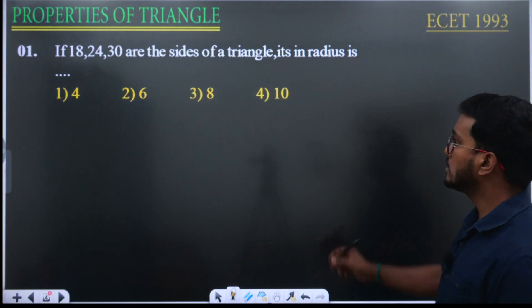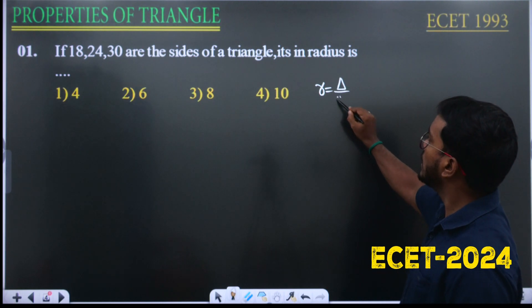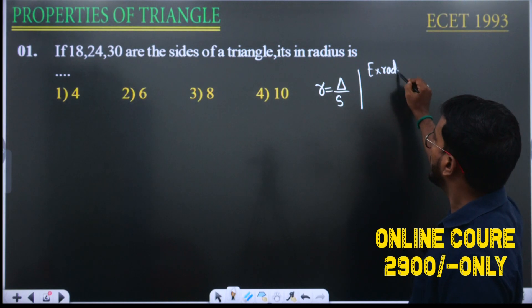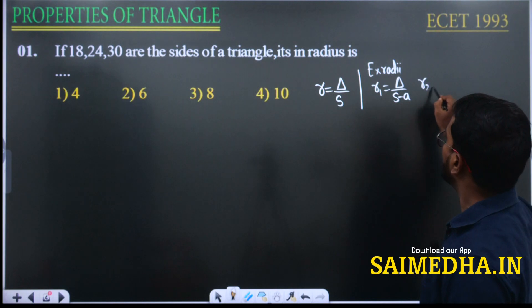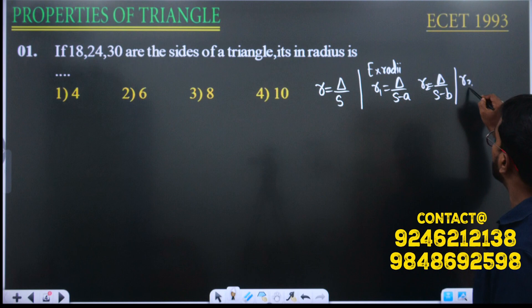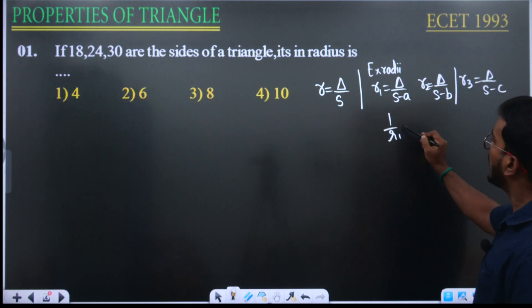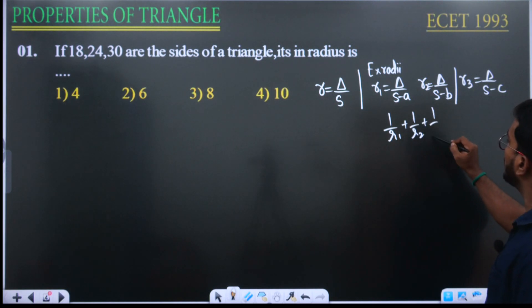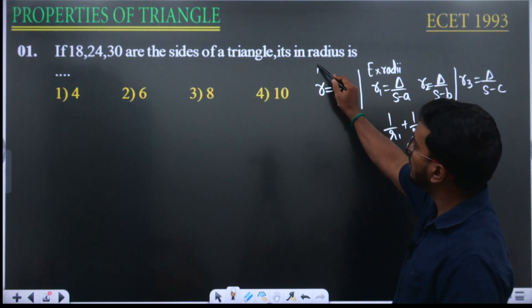We know the in-radius formula: r equals delta by s. The ex-radius formulas are: r1 equals delta by (s minus a), r2 equals delta by (s minus b), r3 equals delta by (s minus c). The relation is 1/r1 plus 1/r2 plus 1/r3 equals 1/r, where r is called the in-radius.